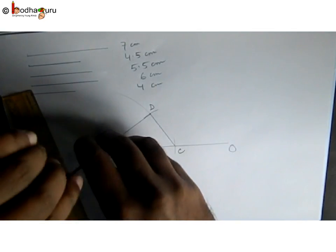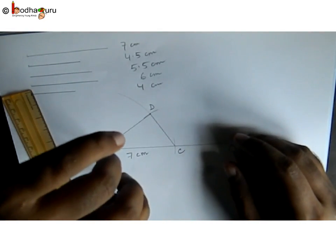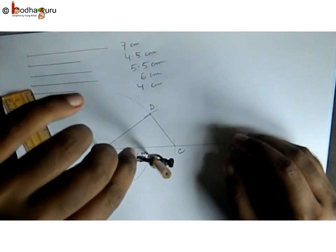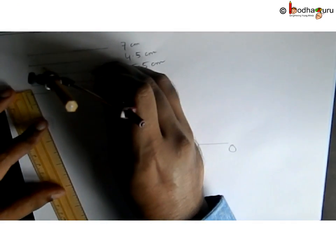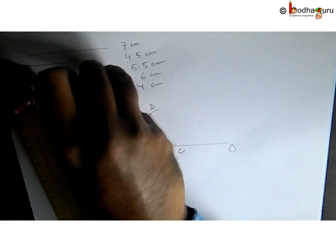Put the needle of compass on A and draw an arc on this side of AC. We need 5.5 centimeter radius in compass.